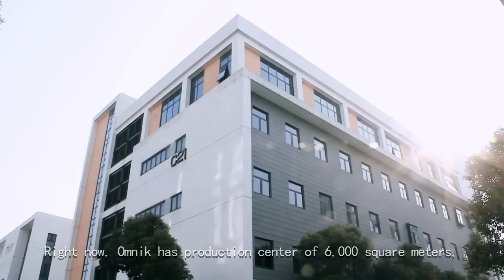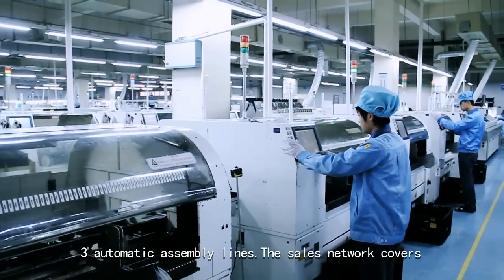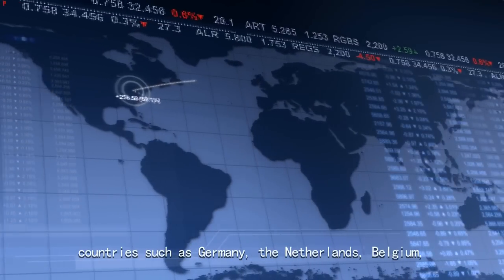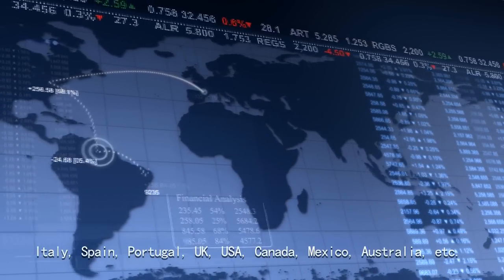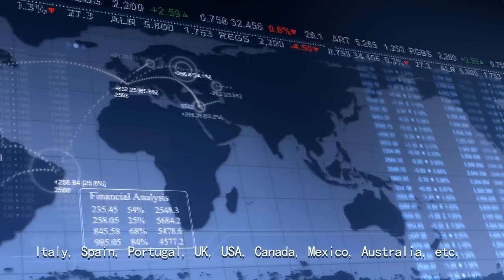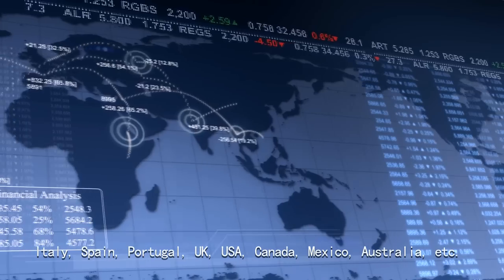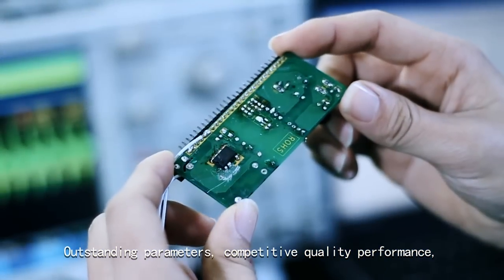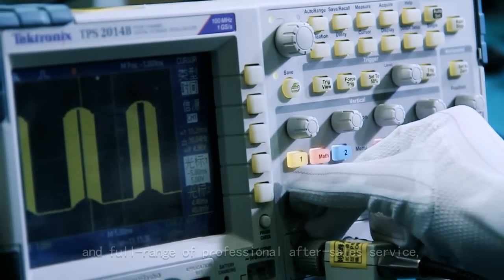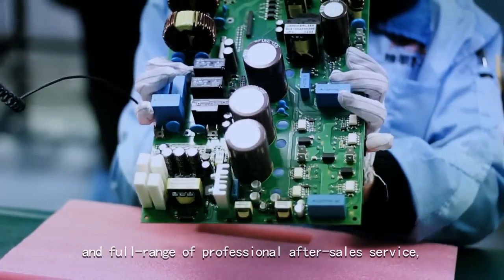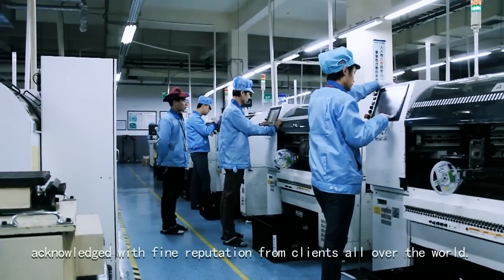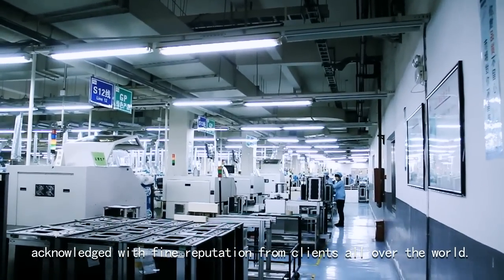Right now, Omnic has a production center of 6,000 square meters with three automatic assembly lines. The sales network covers countries such as Germany, the Netherlands, Belgium, Italy, Spain, Portugal, UK, USA, Canada, Mexico, Australia, etc. Outstanding parameters, competitive quality performance, and full range of professional after-sales service create maximum cost-effectiveness for clients and are acknowledged with fine reputation worldwide.